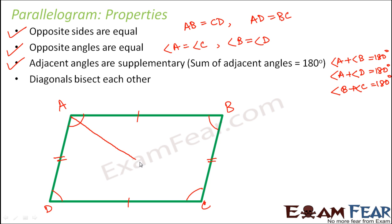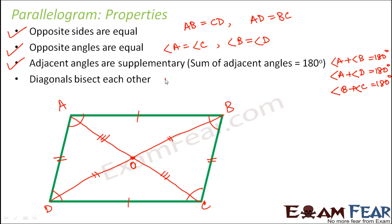Diagonals bisect each other. If you draw the diagonals of a parallelogram, they meet at a point that divides each diagonal into two equal halves. So this will be equal to this - specifically AO is equal to CO and BO is equal to DO. When a line bisects another line, it divides that line into two equal halves.